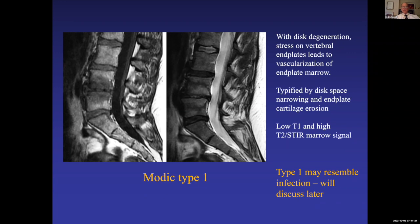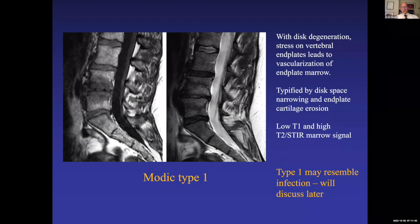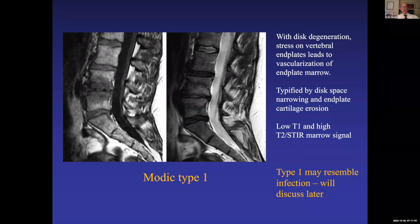The importance of this pattern is that it can mimic infection — particularly where you have marrow edema and low T1 signal. Infection might be a consideration depending on the clinical circumstances. Bob Quencer, who was chair of radiology at Miami for many years, gave a talk on distinguishing degenerative disc disease from infection. He showed the audience 10 cases and felt that in a number of them it was impossible to tell from the initial study whether you were dealing with Modic Type 1 degeneration or infection.